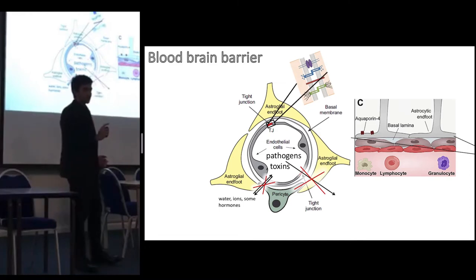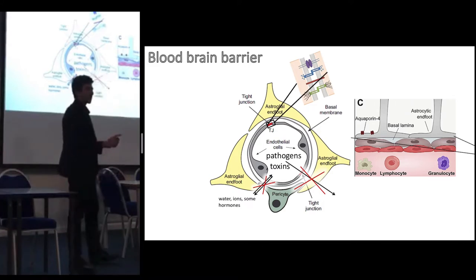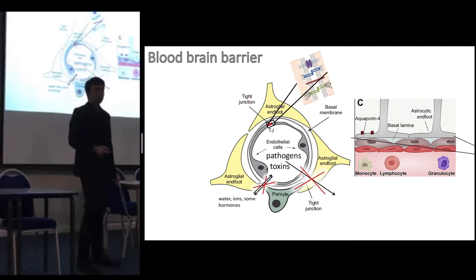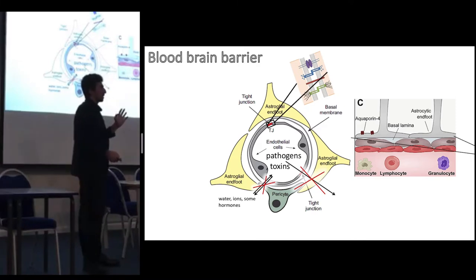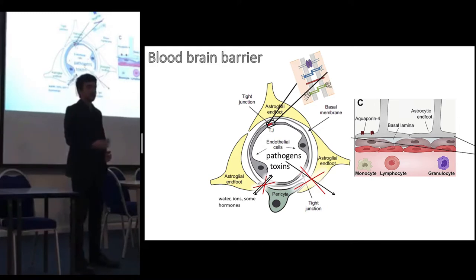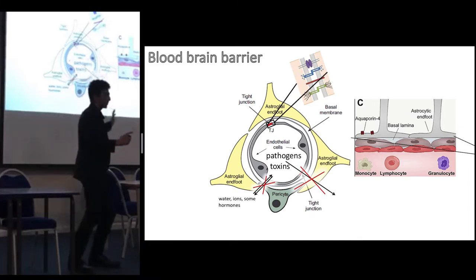Few substances have the privilege of crossing the blood-brain barrier. For example, amino acids or glucose have to pass through the blood-brain barrier to reach the very hungry neurons, and that's why they have complementary carrier proteins to carry them across the lipid bilayer. You might be thinking — why not just open the brain? Wouldn't it allow substances to access the brain better?